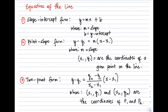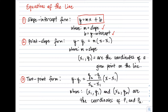The slope-intercept form has the formula y = mx + b, where m is the slope of the line and b is the y-intercept. We can only use this formula when the given information includes the slope and the y-intercept.